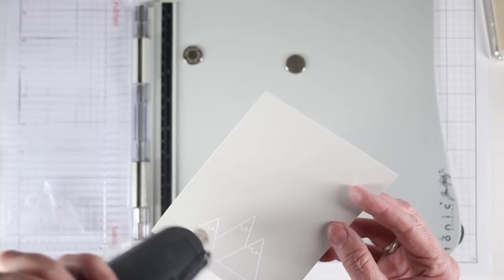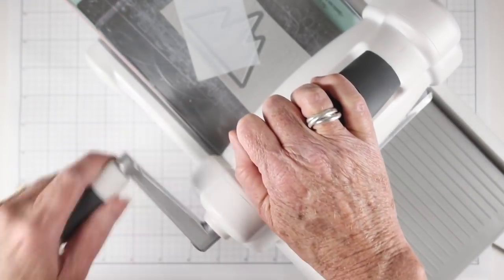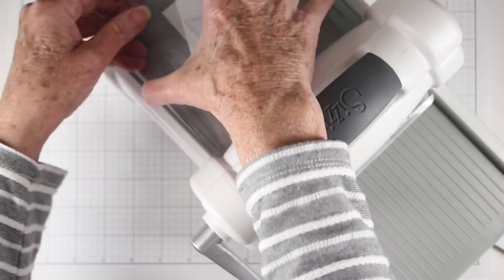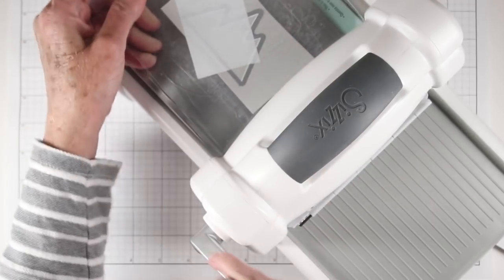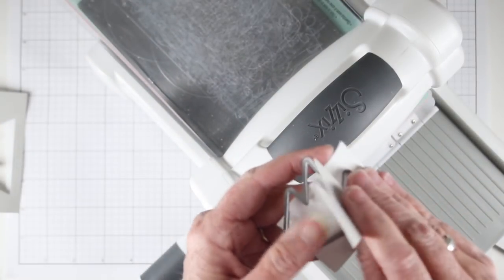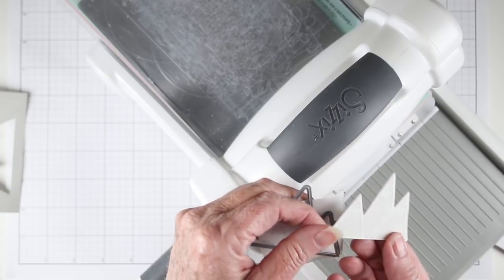Once I have my images stamped and embossed, I use a piece of post-it paper to secure my die in place so there's no slippage and I can remove the die cut piece from the post-it note paper and I have a perfectly die-cut image.